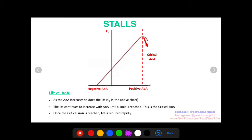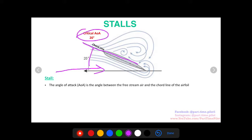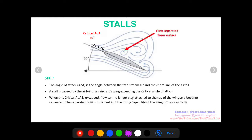Let's look at what this looks like on an aircraft's airfoil. Here we have an airfoil with the angle of attack, which is between the free stream air here and the chord line. Let's say the critical angle of attack is 20 degrees, so right now we're at an angle of attack of 20 degrees—we're at the critical angle of attack. A stall is caused by the airfoil of an aircraft's wing exceeding the critical angle of attack.